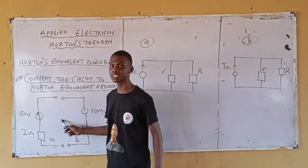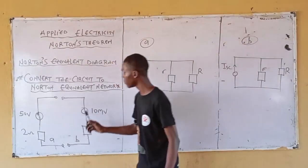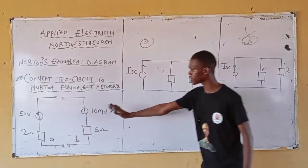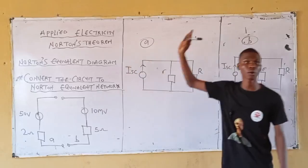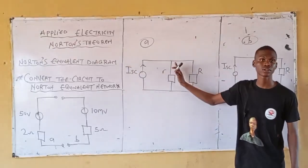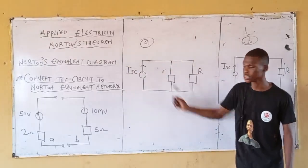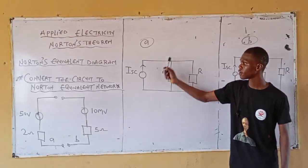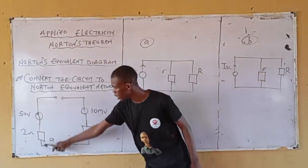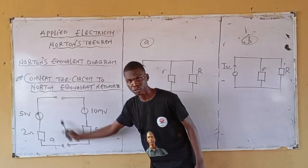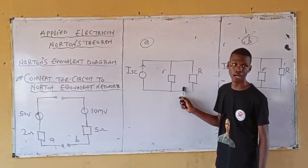We are given this complex circuit. Before we analyze it, I recall my work — the equivalent Norton resistance. For circuit A, this is my Norton equivalent diagram.